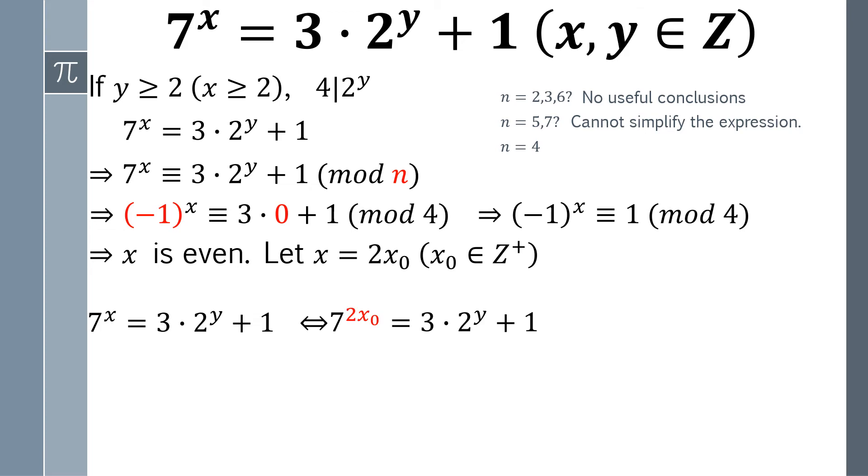And we substitute this one into the original equation. And 7 squared can be changed as 49. The original equation becomes in this format. It's time for us to do another modular arithmetic trick.